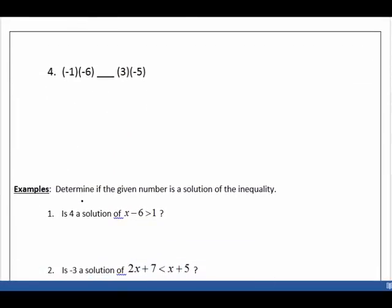Moving on, question number four. This is a product, so now we have to do a little bit of math. Negative one times negative six is positive six. Three times negative five is negative fifteen. And then we're comparing those, so that was just one extra step. And of course, six has to be greater than negative fifteen.